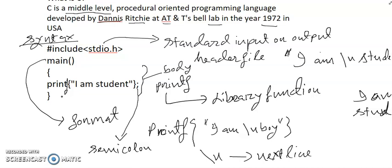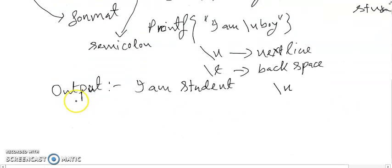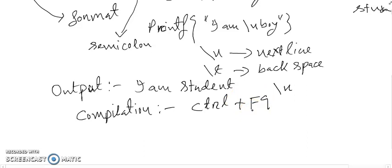Next is the compilation. How can I compile this programming? For compilation we use Ctrl+F9. Then compilation will start. To execute, compile, execute the program use Ctrl+F9 and use Alt+F5 to view the output. This is the compilation. This is the Turbo C.